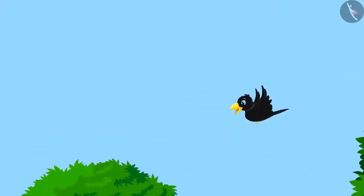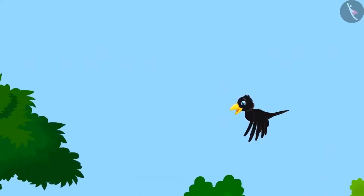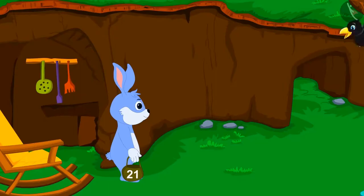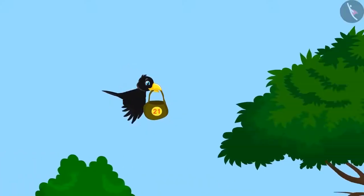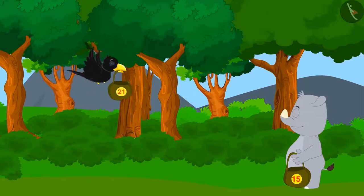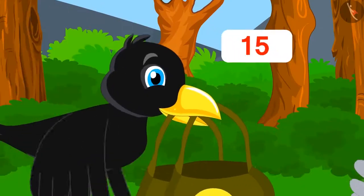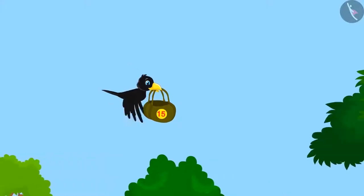The crow set out in search of stones. First, he went to his friend Bunny Rabbit. Bunny gave him 21 stones. Then he went to Gagoo Hippo, and Gagoo gave him 15 stones.